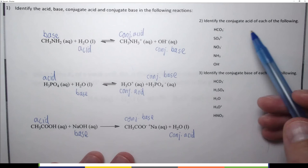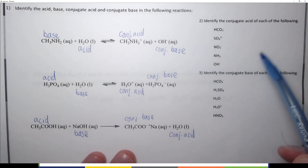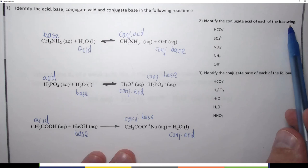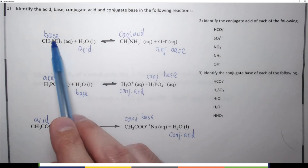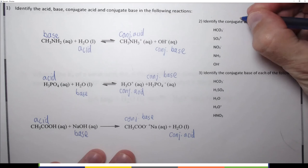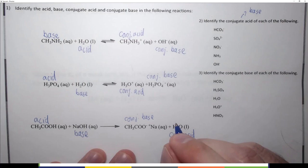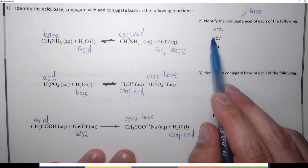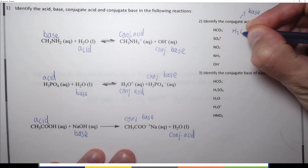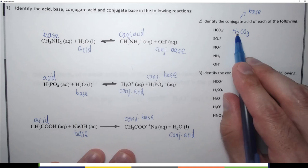Now let's look at problems where we are not given a whole reaction, but are asked to identify the conjugate acid of each species. Bases have conjugate acids, so the molecule must behave like a base — bases accept protons. For HCO₃⁻: add an H⁺, so we get H₂CO₃. It had one H, now it has two H's. The charge was minus; adding H⁺ gives plus + minus = neutral.